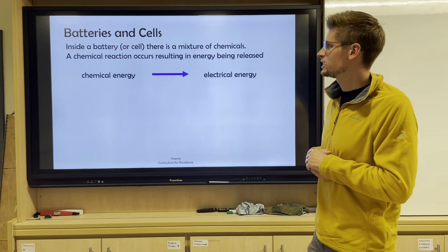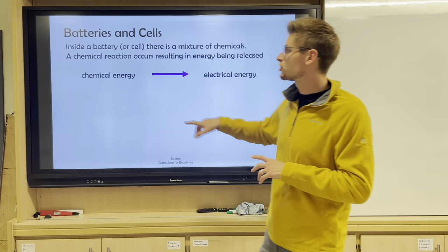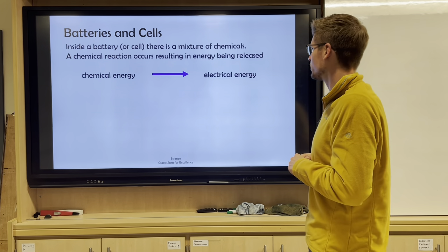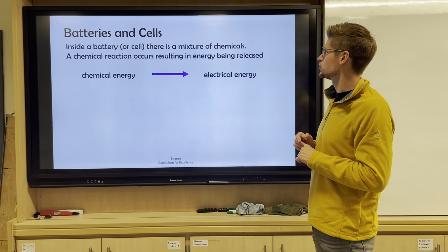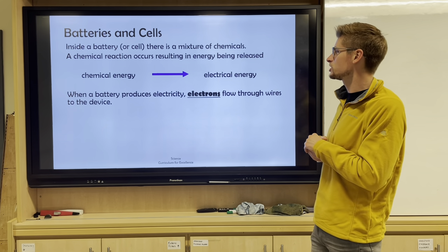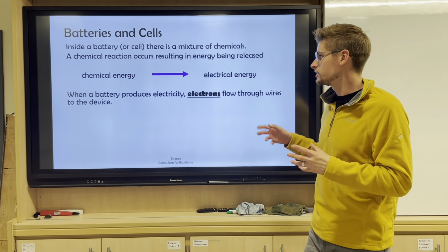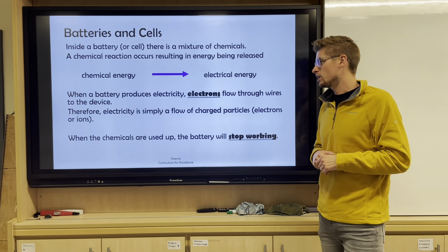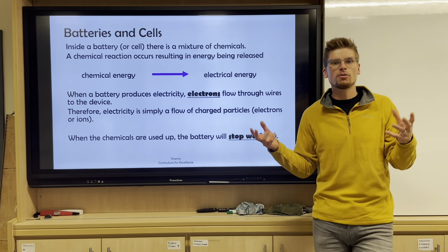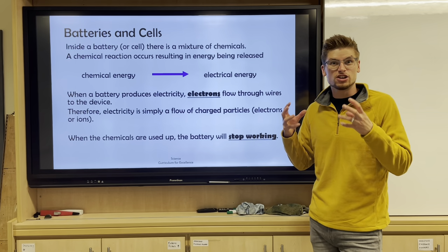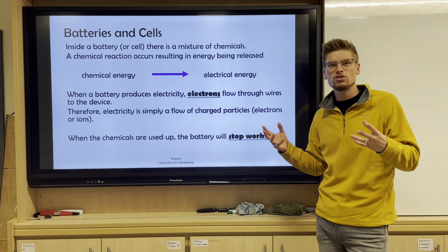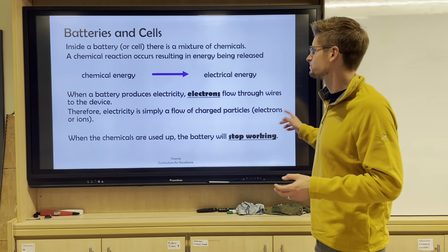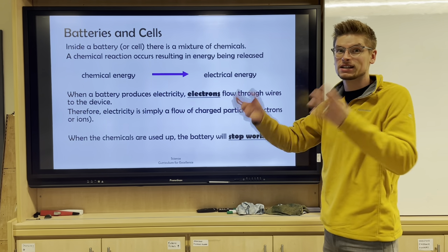Inside the cell, chemical energy comes from the difference between the metals - a chemical reaction takes place that converts chemical energy into electrical energy. This produces electricity: electrons flow through the wire and into the device. Electricity is simply a flow of charged particles. When the chemicals are used up the battery stops working - just like batteries at home, once the metal strips and electrolyte run out, whatever you're using stops working. So we go from chemical energy to electrical energy, which links back to key area 2.